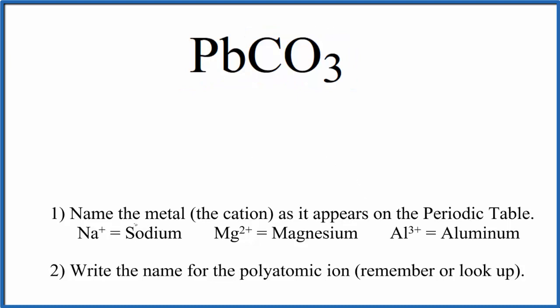First, we write the name of the metal as it appears on the periodic table. So Pb, that's lead. And then we'll write the name for the polyatomic ion. So you either remember that CO3, this polyatomic ion, is called the carbonate ion, or if you're allowed, you look it up. So far, we have lead carbonate is the name for PbCO3.